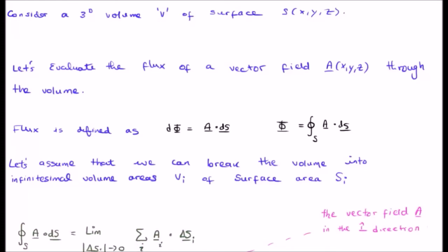And let us try and evaluate the flux of a vector field, let's call the vector field capital A, through this particular volume. Now we know the flux is defined as the closed surface integral of your vector field dotted with the infinitesimal area element ds. Or we could say the infinitesimal flux element d phi is A dot ds.